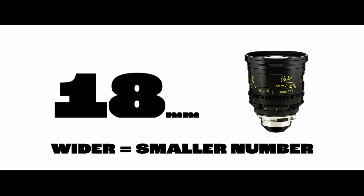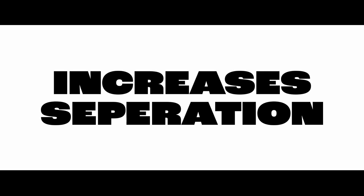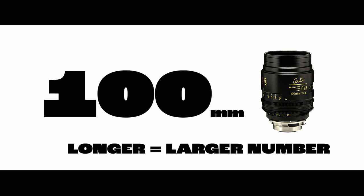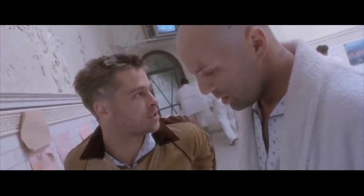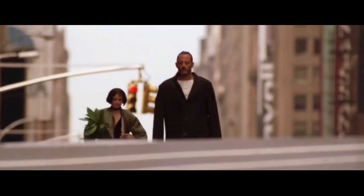Two other ways to change the sense of depth within a scene involve focal length. A wider focal length like 18mm increases separation between foreground and background, while a longer lens like 100mm compresses them together. A wide-angle lens on a frantic actor produces nervous, uncomfortable movement, while a long lens of an actor walking toward camera creates a feeling of little progress — or in a smaller location, a sense of claustrophobia.